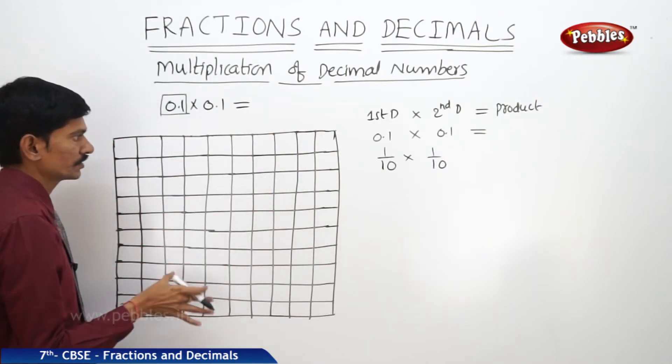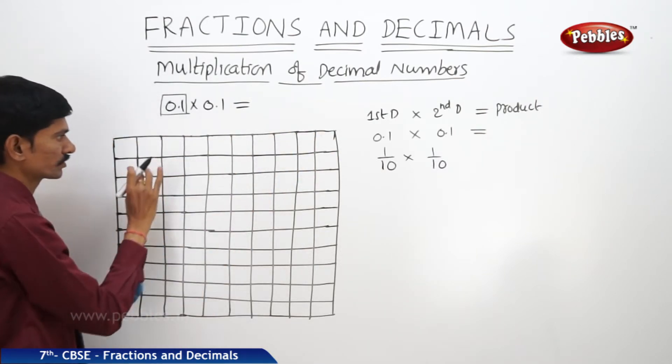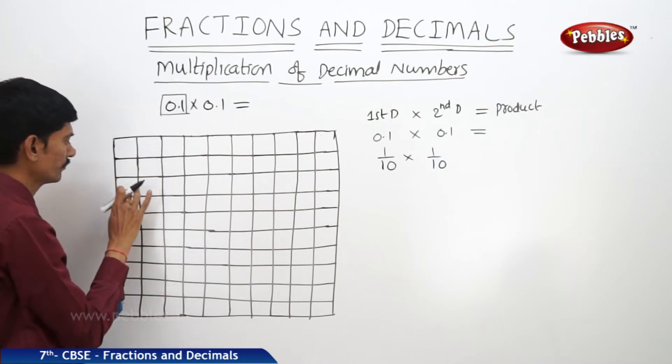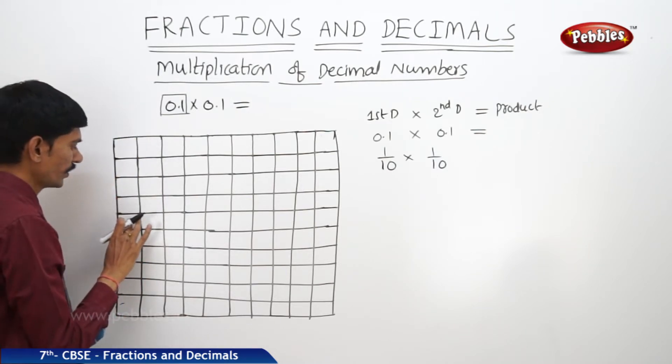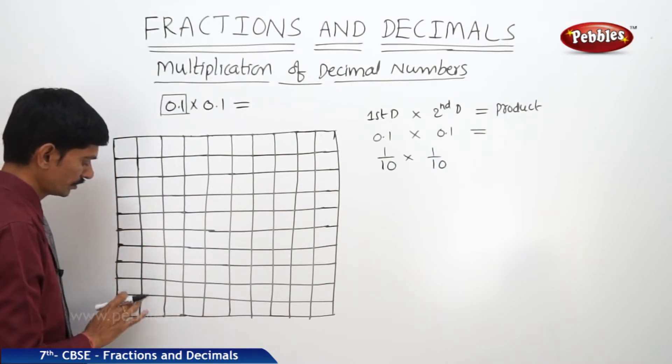Column-wise there are 10 rectangles, and row-wise also there are 10 rectangles: 1, 2, 3, 4, 5, 6, 7, 8, 9, 10.